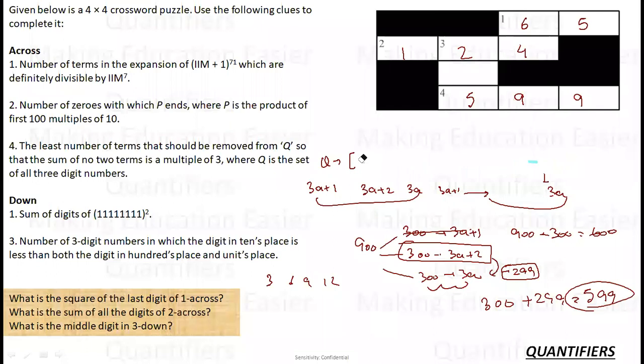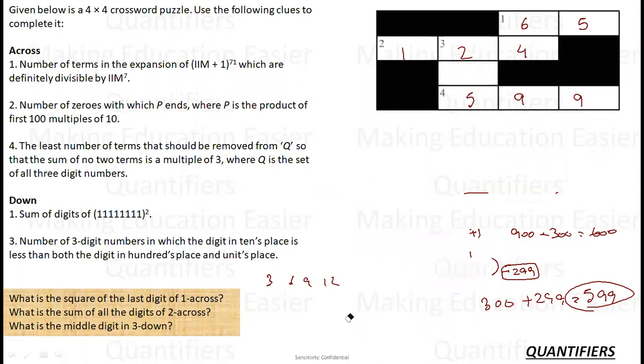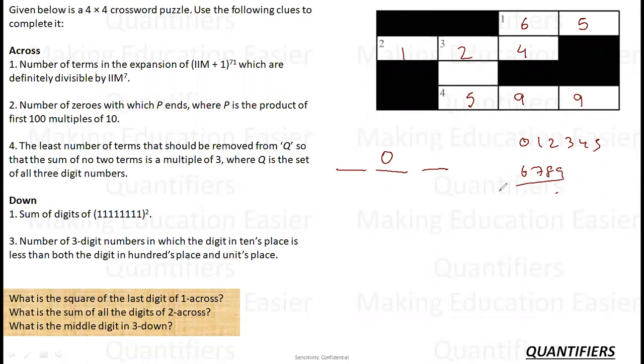Now I have left with only one thing. That is 3 down. What is the clue for 3 down? The number of 3 digit numbers in which the tens place is less than both the hundreds and units place. So the tens place is less than this as well as this. Let's make the cases. Let's put a 0 in the middle. So 0, 1, 2, 3, 4, 5, 6, 7, 8, 9. I have 10 digits. If I am using 0 in the middle, I cannot use 0 anywhere else. Also, I cannot use 0 in the hundreds place since I have to keep the number a 3-digit number. So there are 9 possibilities for the hundreds place, 9 for the units place. The total cases are 81.